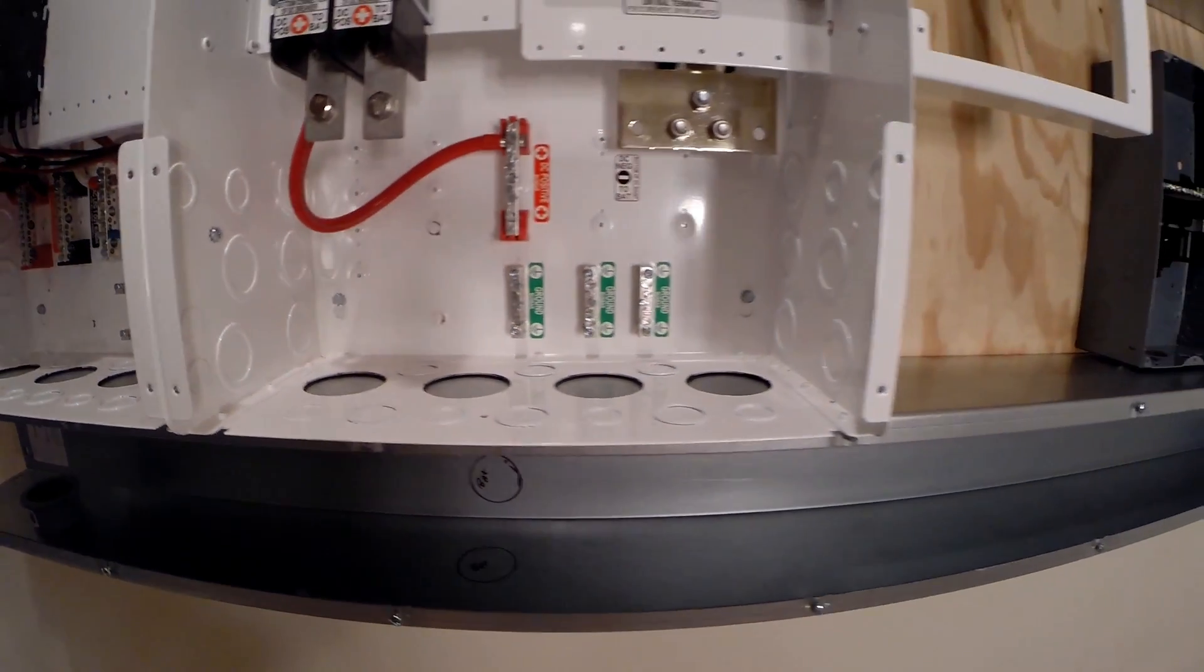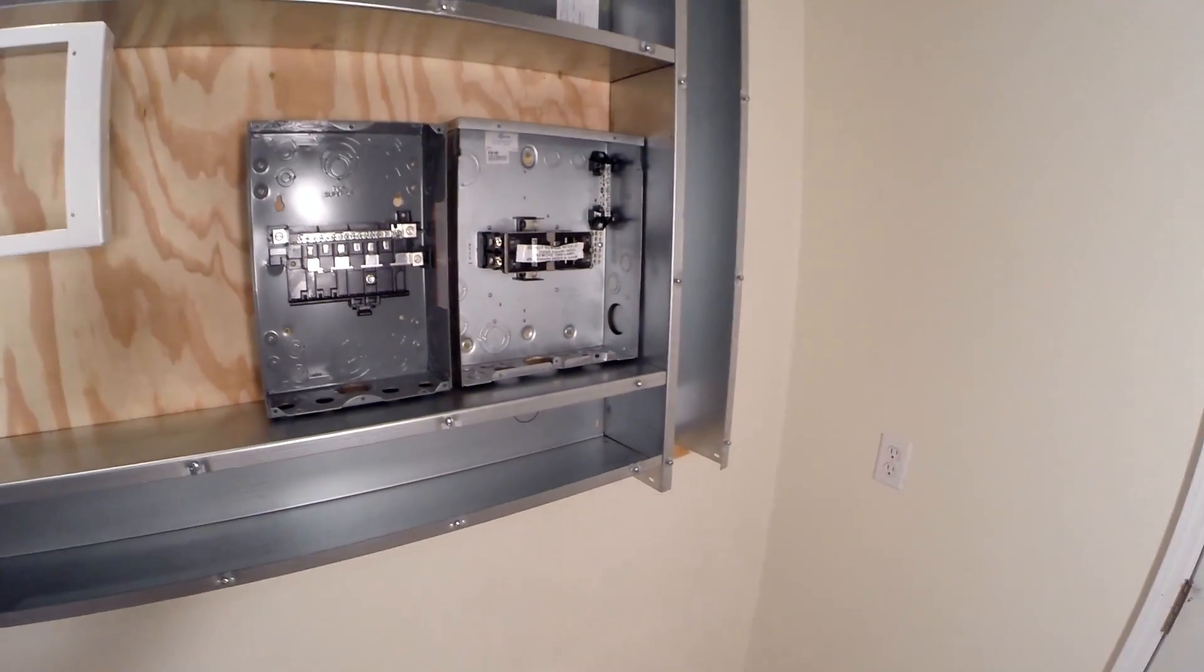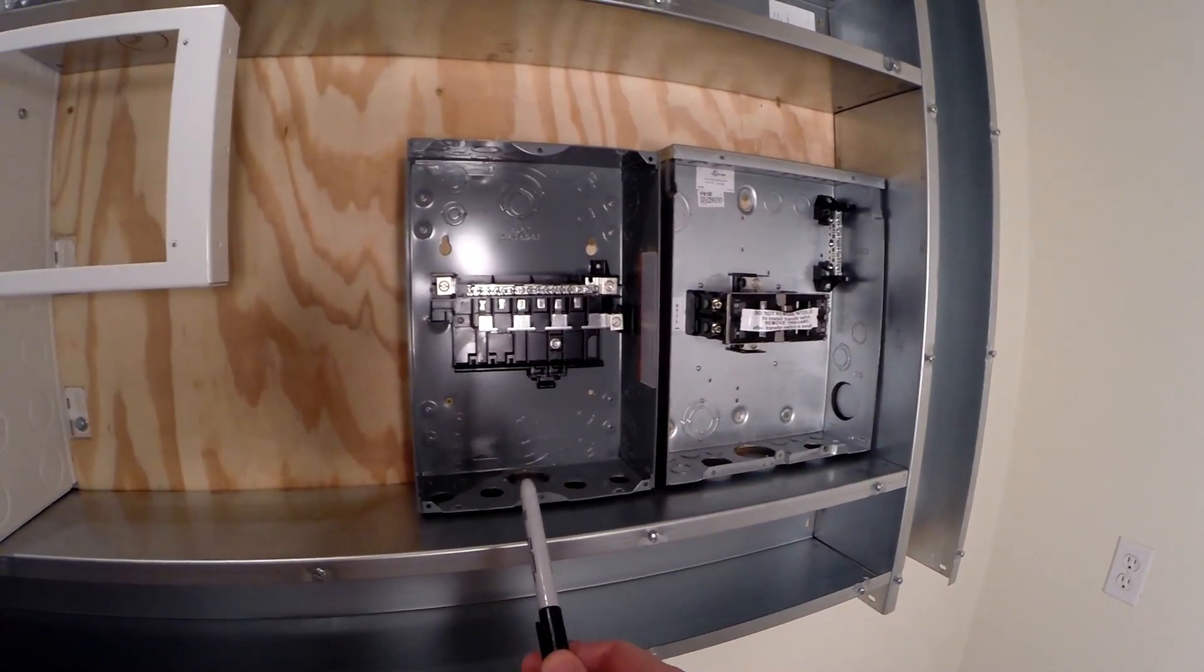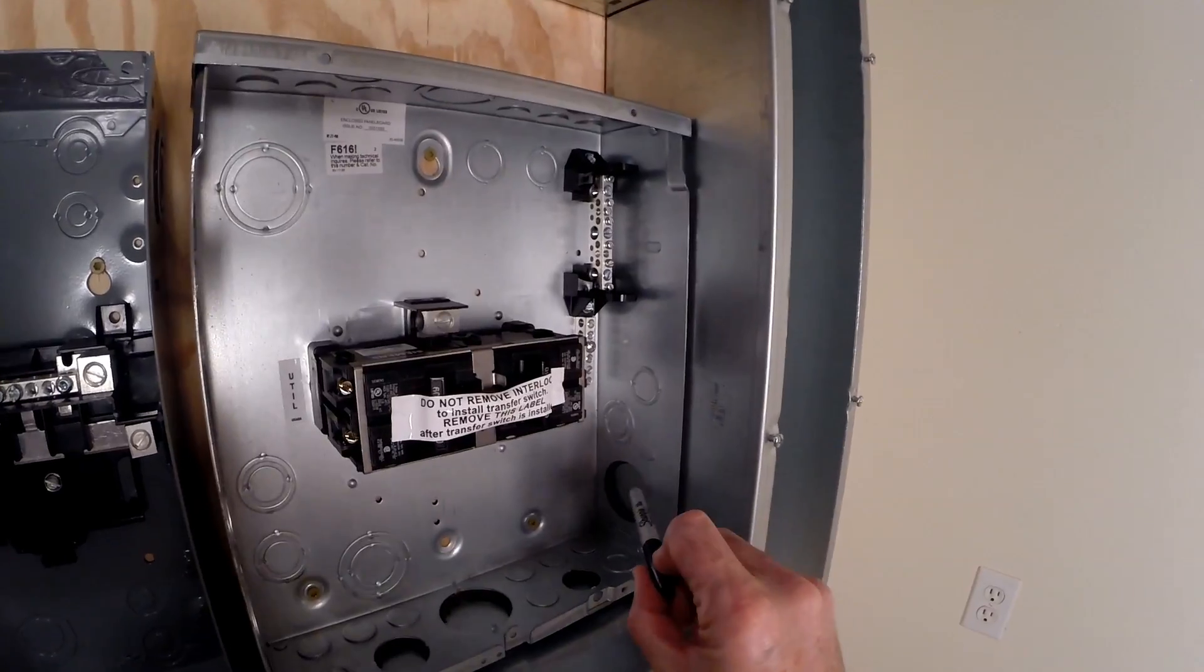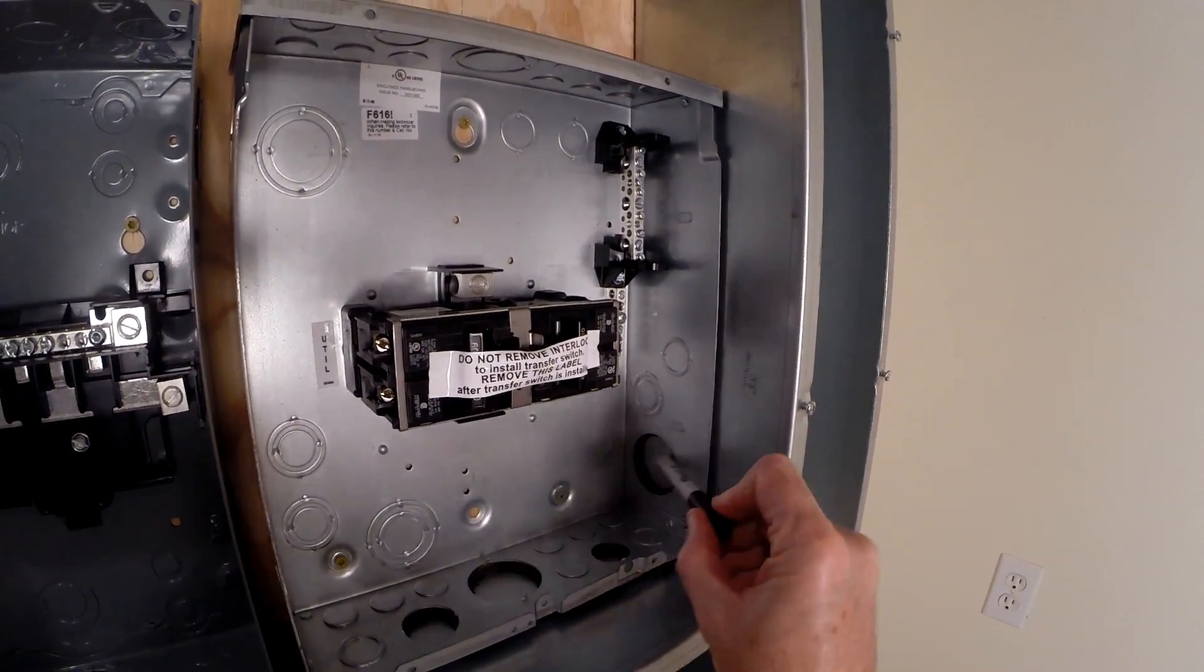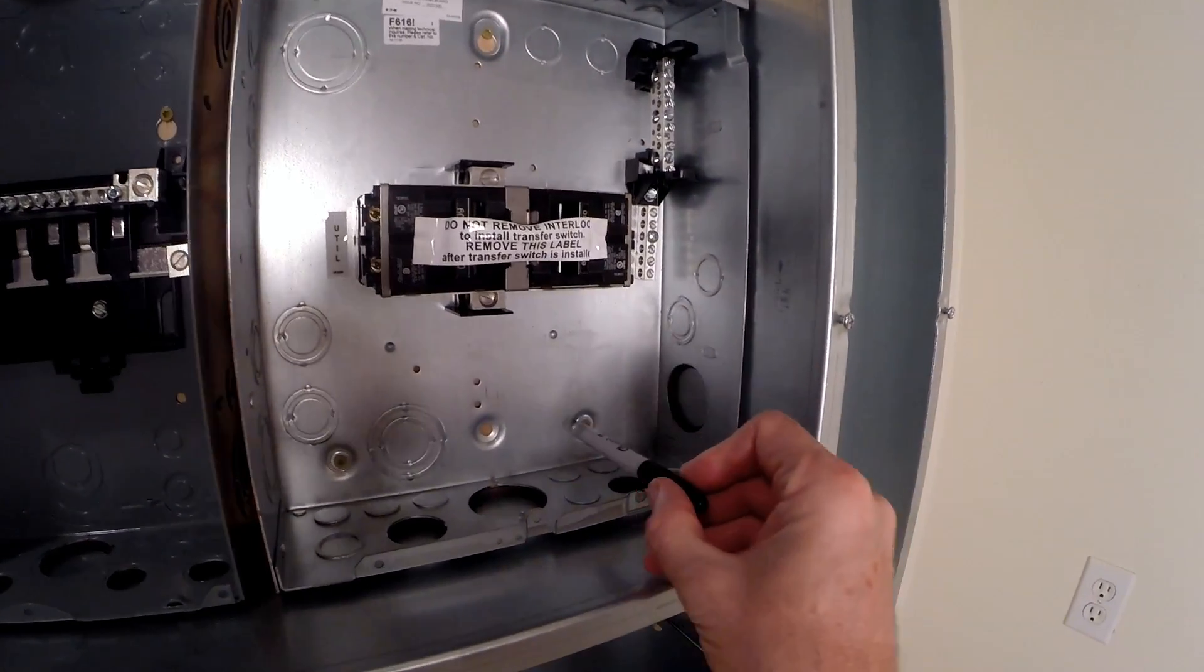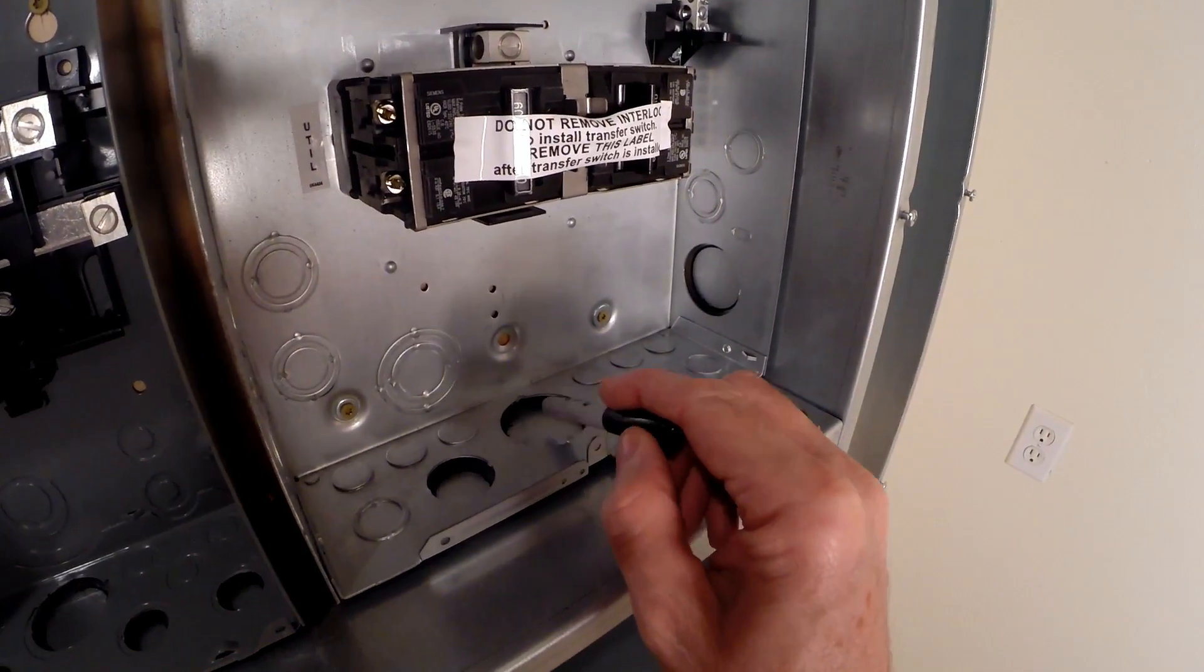Over here I've got the transfer switch on the right and the secondary output panel. For the transfer switch, I'll probably bring main power in from the utility here. This will be the input for that, and it'll run out through that cable tray up to the ceiling. We've got this marked off that'll have to be cut.